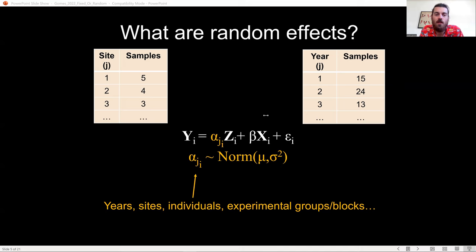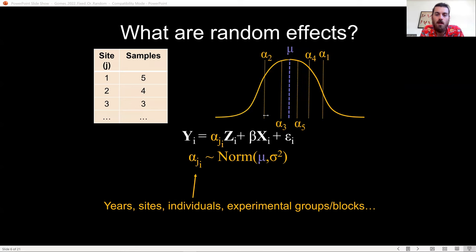But instead, each year or site might deviate from the overall mean of the survey time period or larger location. That is, the effect of each site might be drawn from a theoretical region-wide distribution with a mean and variance.